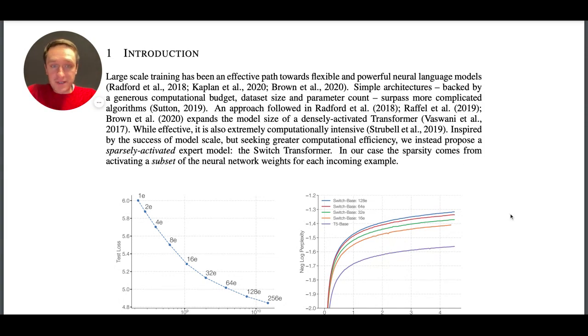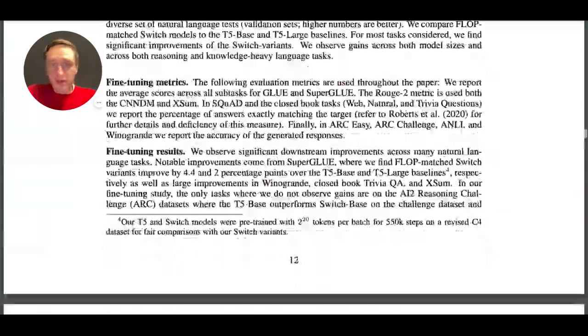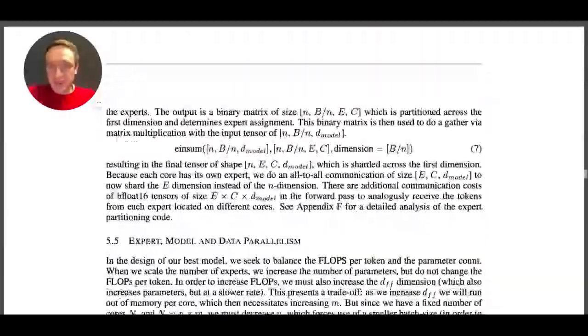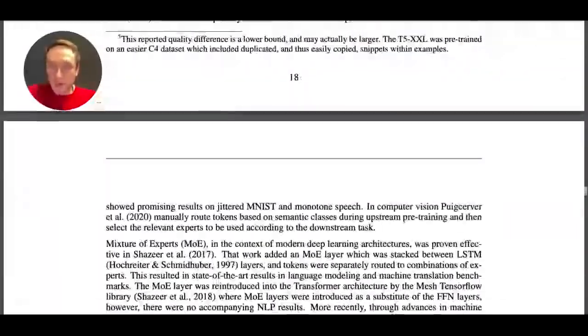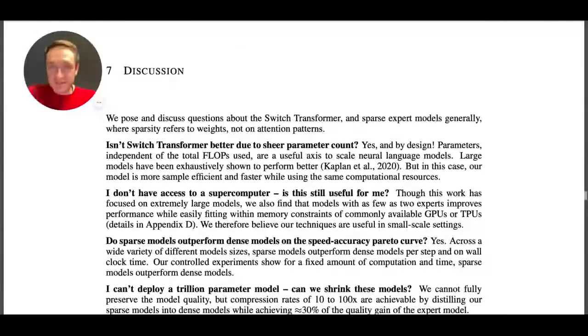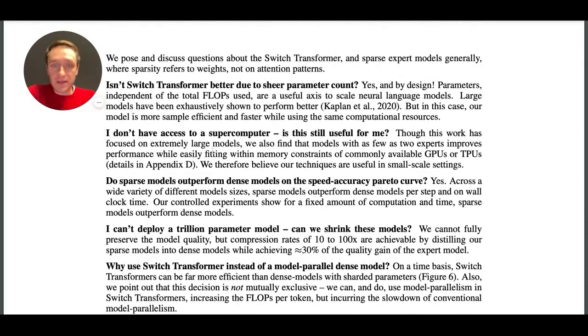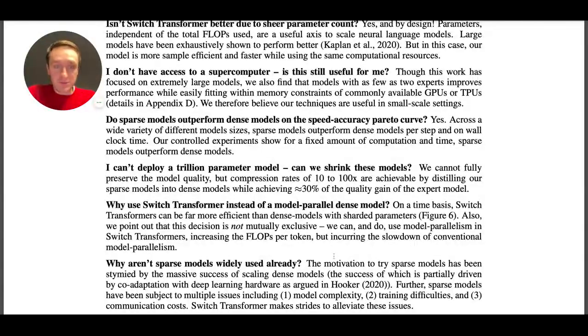At the end of the paper, the authors answer a couple of questions regarding what you might want to ask. For example, can you make the model smaller and make it useful still? Can you shrink the model? They answered that you can shrink it from 10 to 100 times, achieving still like 30% quality loss. It's still needed to have a supercomputer to run it. There are a couple of other questions that you might find useful as well.